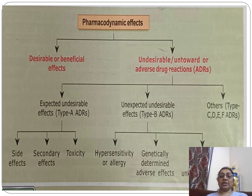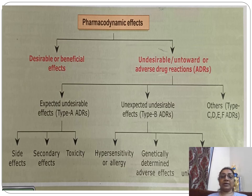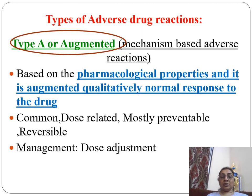The pharmacodynamic effects of a drug include two kinds: desirable or beneficial effects, and undesirable or untoward adverse effects. Undesirable effects are subdivided into three groups: expected undesirable effects, unexpected undesirable effects, and others. Expected undesirable effects are further subdivided into side effects, secondary effects, and toxic effects.